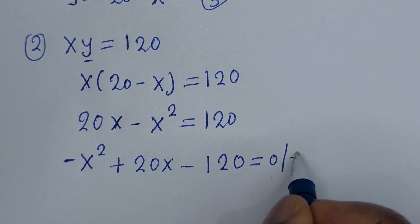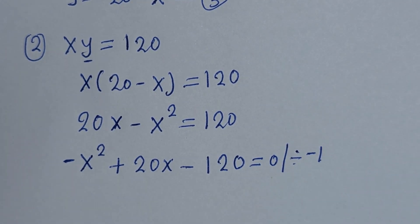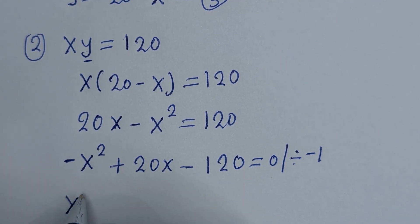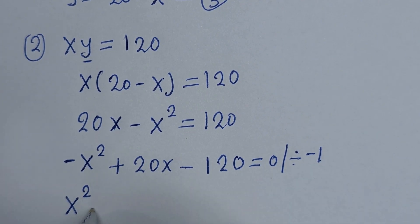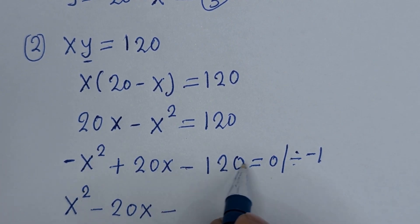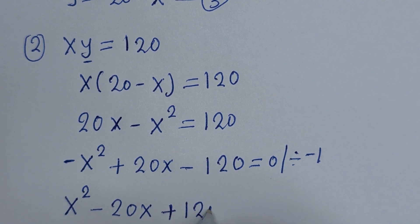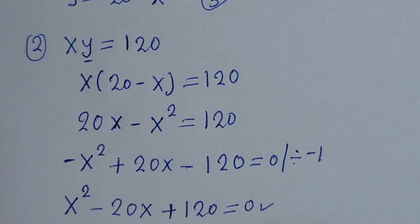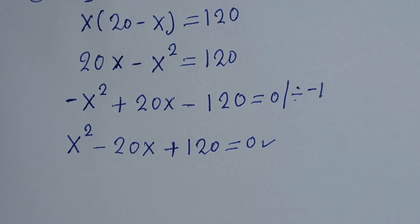Let us divide all of this equation by minus 1: minus x squared divided by minus 1 is x squared; plus 20x divided by minus 1 is minus 20x; plus 120 divided by minus 1 is minus 120. So we get x squared minus 20x plus 120 is equal to 0. This is a quadratic equation — let us solve this using the quadratic general formula.